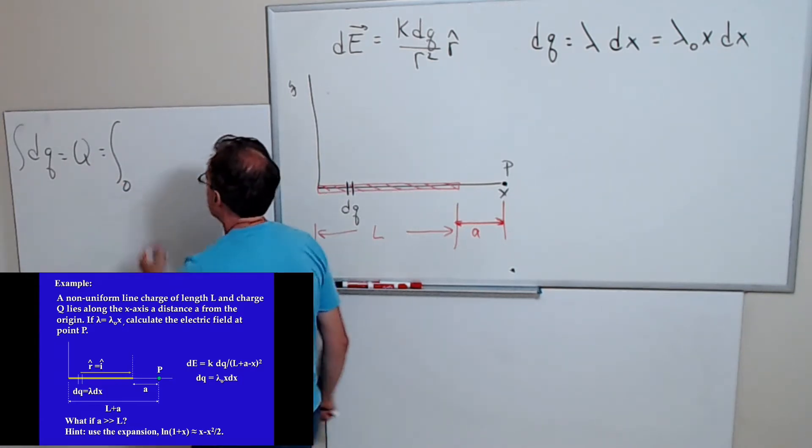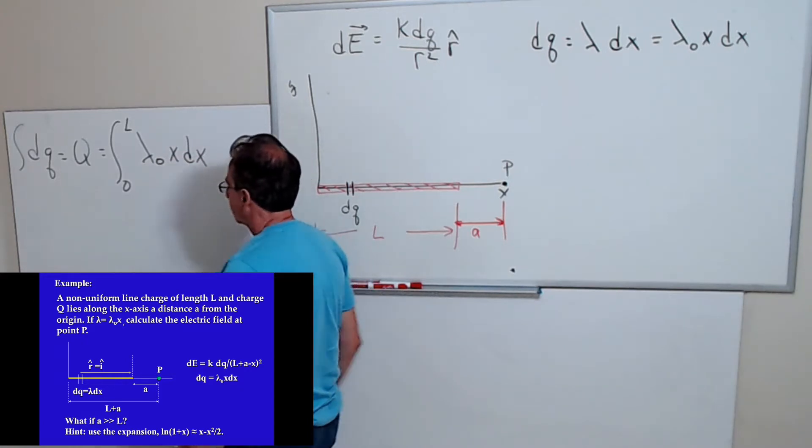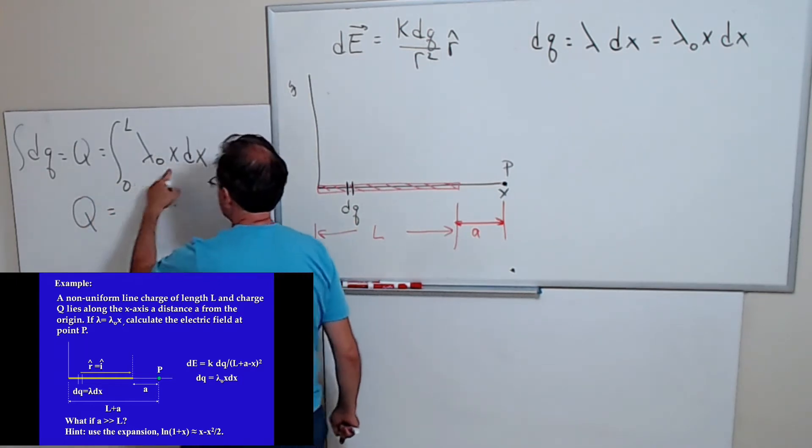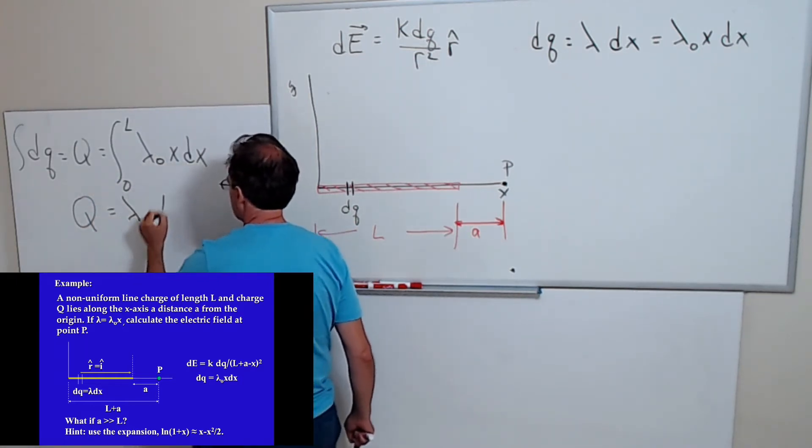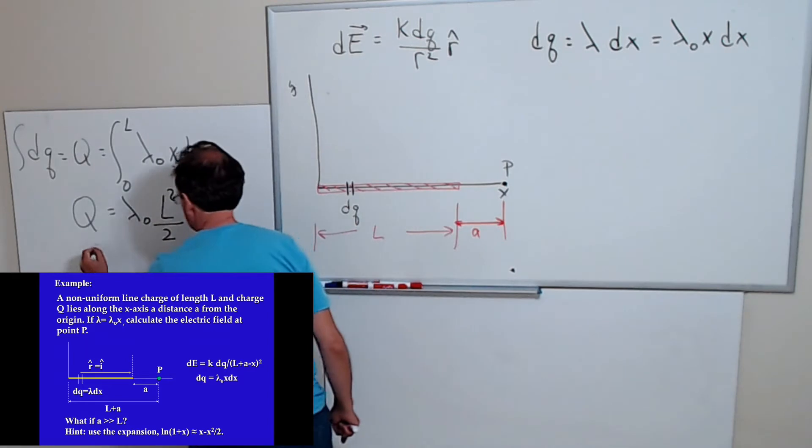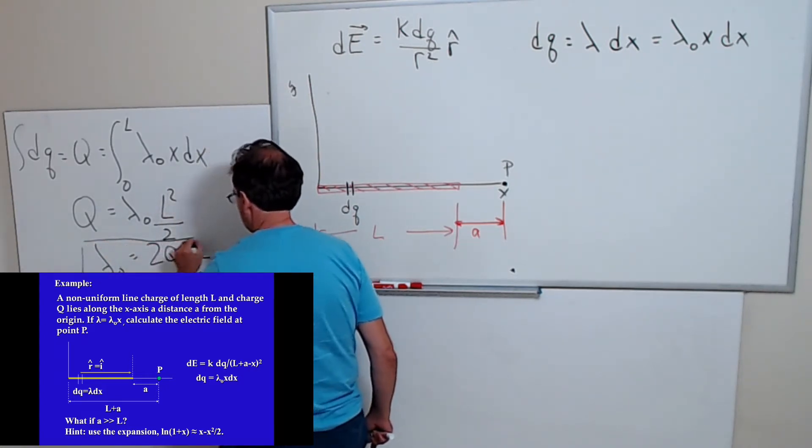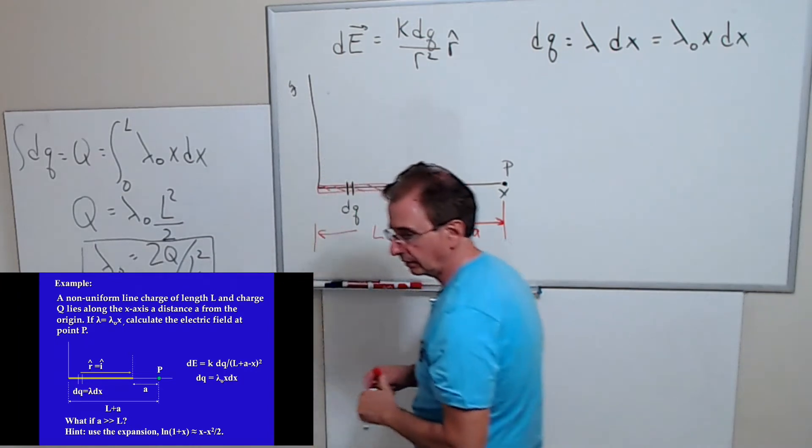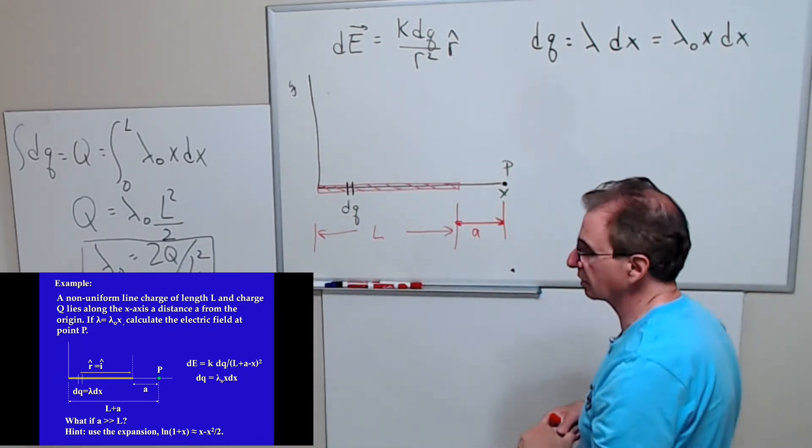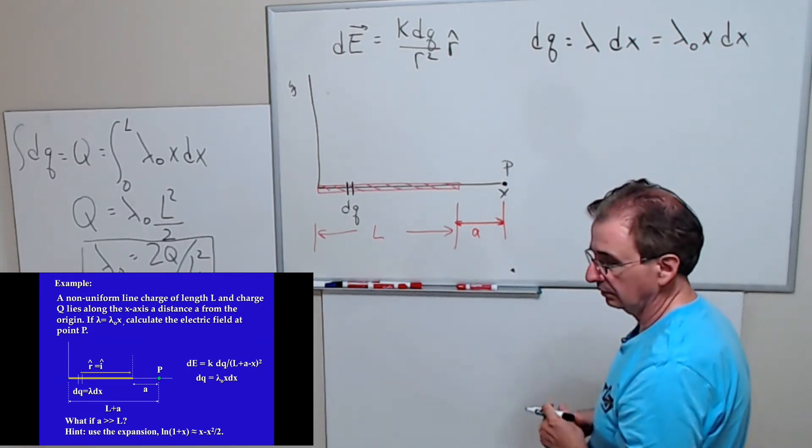So I integrate over the whole length of the rod. This integral is simple. This is going to give me lambda naught times L squared over two. Solving for lambda naught, I get 2Q over L squared. Okay, so at least I know what lambda naught is. I can substitute my lambda naught however we want to do it.